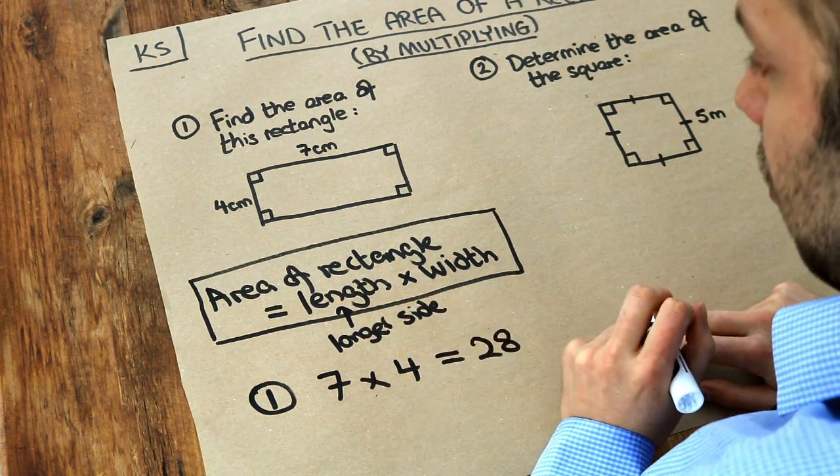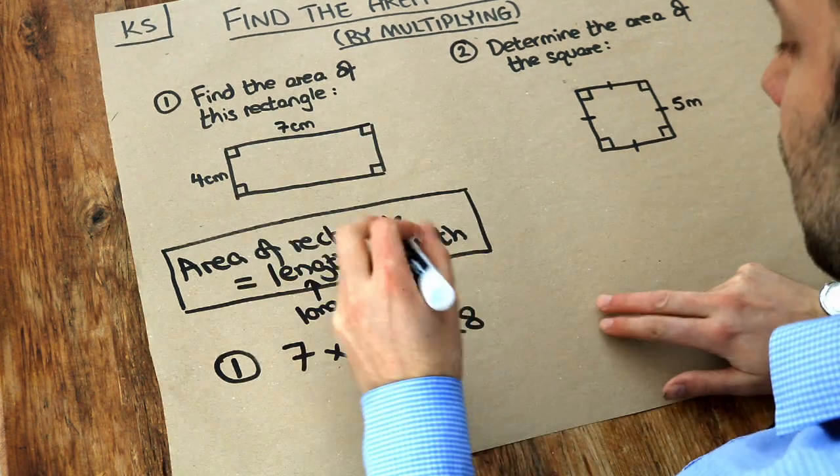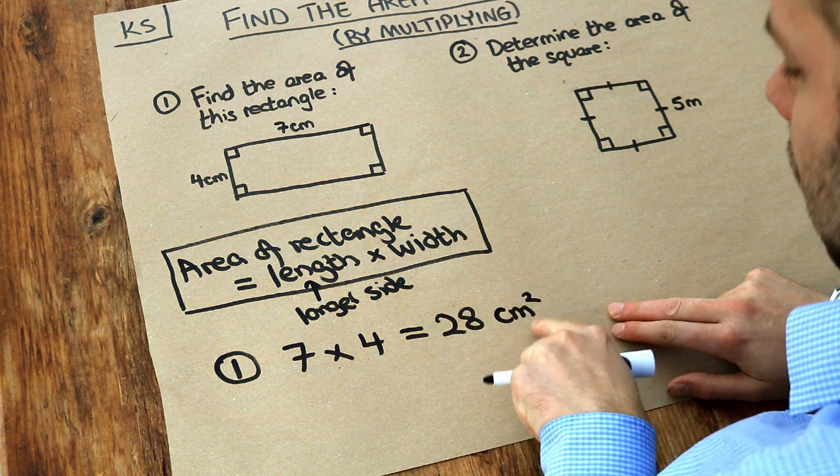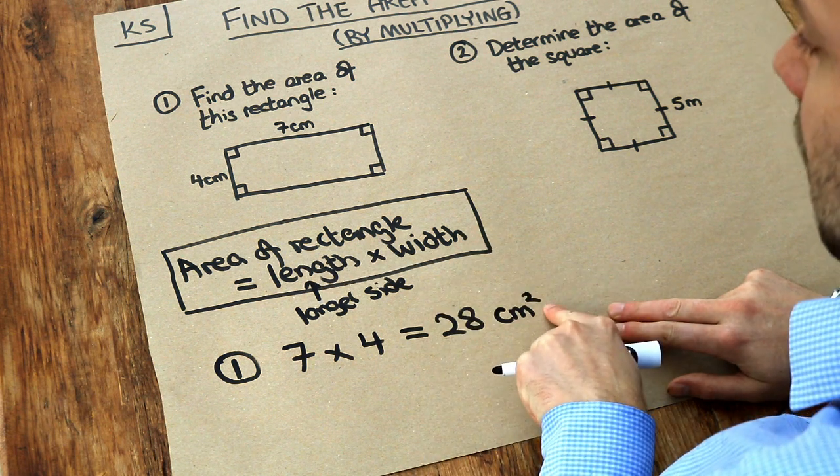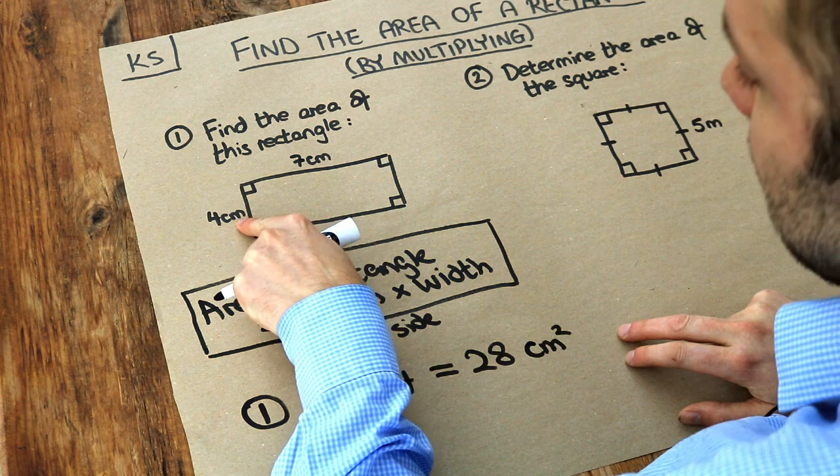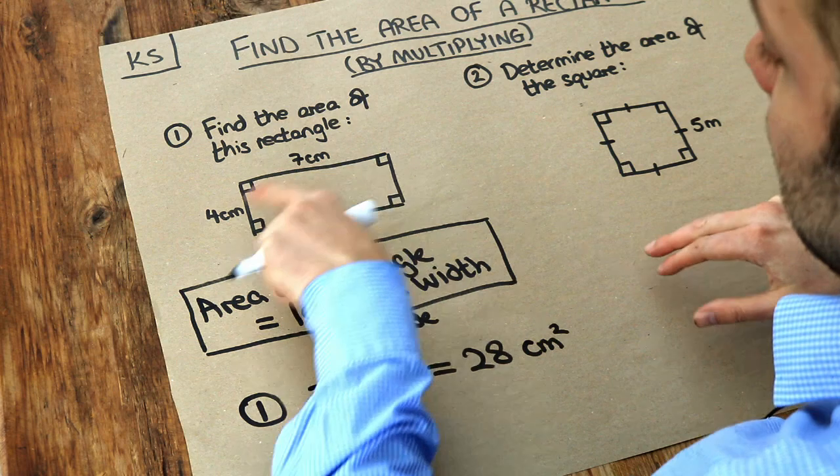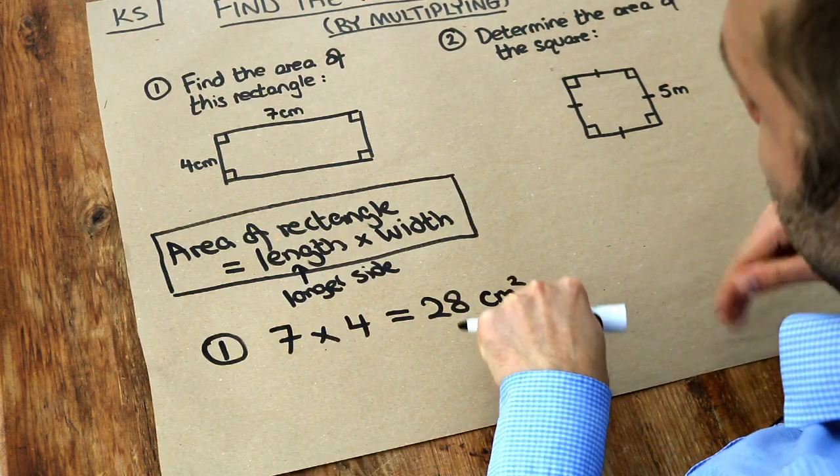Now we also need a unit. Now because these units are centimetres we end up with a unit of centimetres squared. And the reason we get centimetres squared is because we've got centimetres times centimetres. Now if I had say x times x it would be x squared. So centimetres times centimetres is centimetres squared.